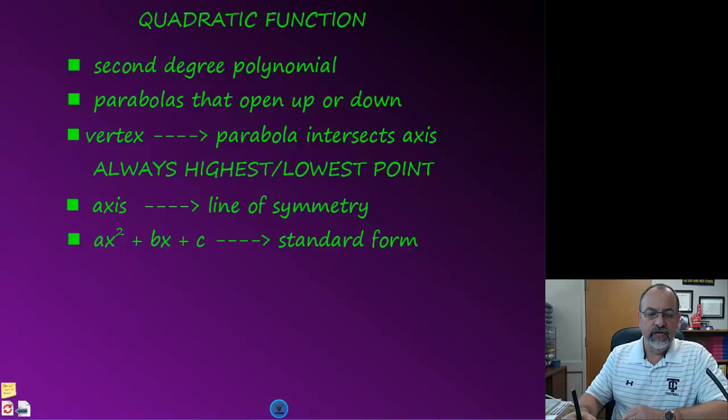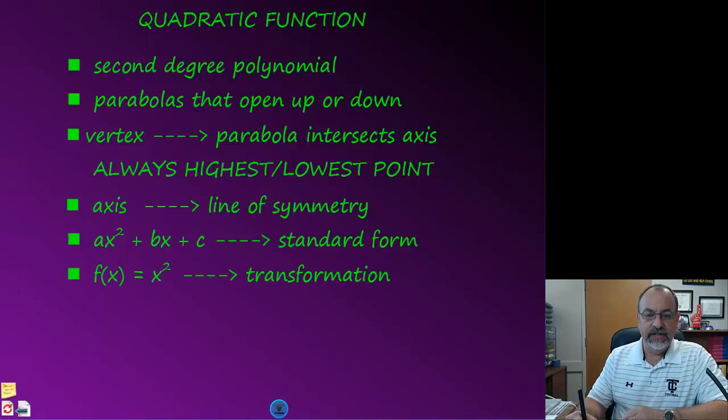The standard form of a quadratic equation is ax squared plus bx plus c and f of x is equal to x squared is the parent function or the simplest form of the function. And then what we're going to look at in the rest of this video is the transformation of this function using the transformation skills that we learned last year and which we talked about earlier this year.